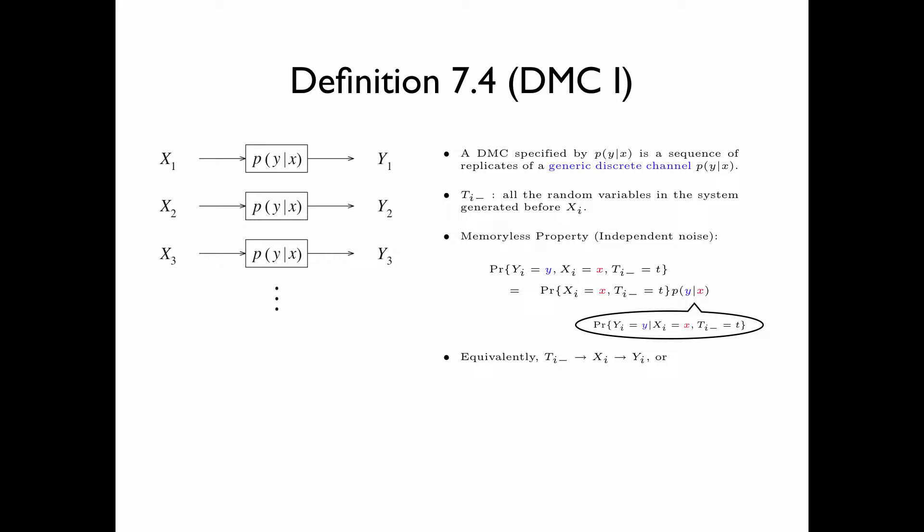The memoryless property is actually equivalent to the Markov chain TI minus → XI → YI. In words, given XI, the input at time I, YI, the output at time I, is independent of everything in the past.